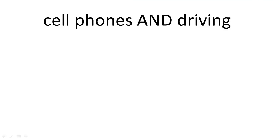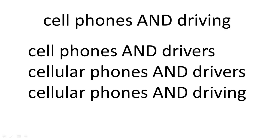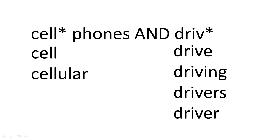Truncation can also be extremely useful. Let's say you're researching the safety of driving with cell phones. You could search for cell phones and driving, but you would then be missing any results that perhaps mention cellular phones or drivers. The asterisk tells the computer that your term can have any ending beyond the letters you've already typed in. So DRIV* becomes a search for drive, driver, drivers, and driving. You can use this for all sorts of words that have multiple endings.